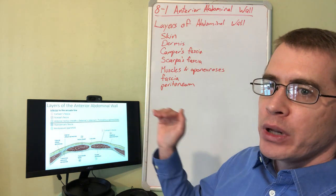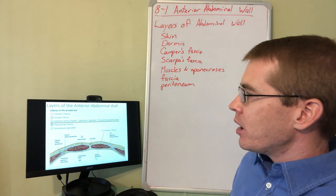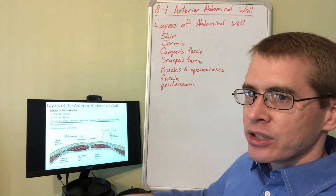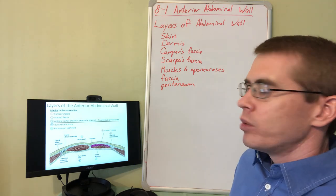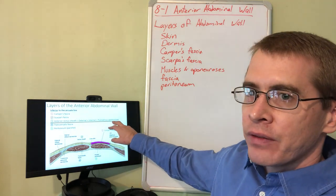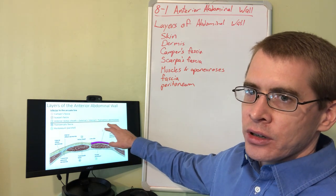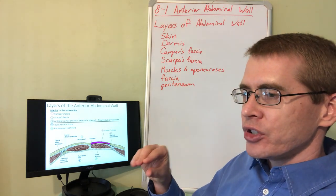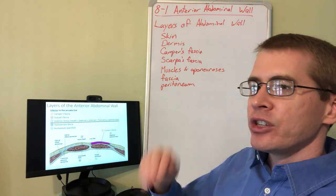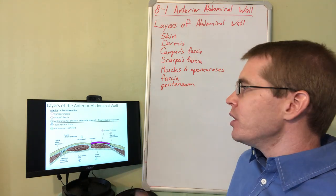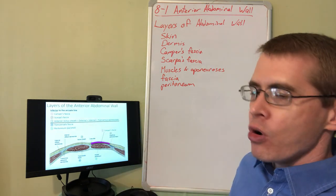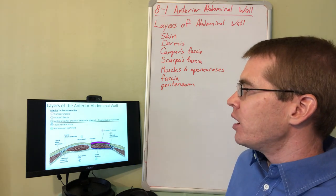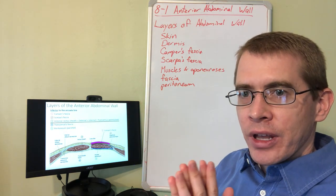Below the arcuate line, because the rectus abdominis muscles go deep to the anterior rectus sheath, the structures behind rectus abdominis are much more limited. We still have Camper's and Scarpa's fascia. The anterior rectus sheath below the arcuate line is made up of the aponeurosis of all the abdominal rotator muscles — the external, internal, and transversus abdominis. Then deep to the rectus abdominis muscle there are only two layers: the transversalis fascia and the parietal layer of peritoneum. That's it for this part of the abdominal wall lecture.